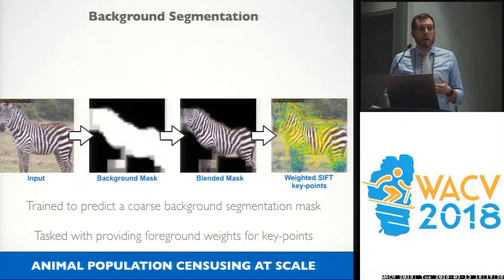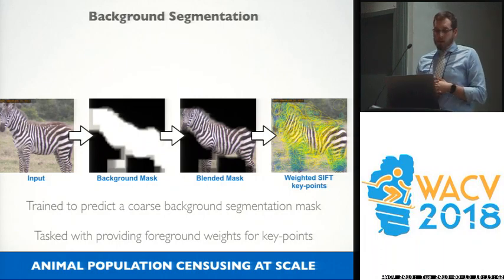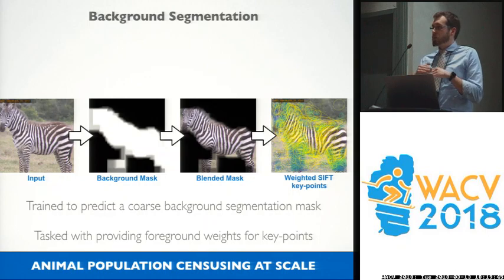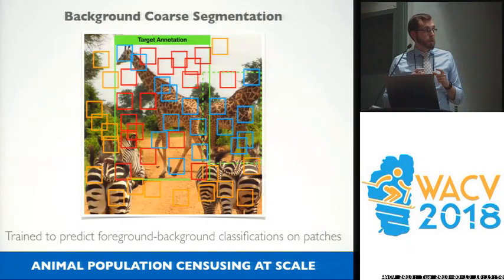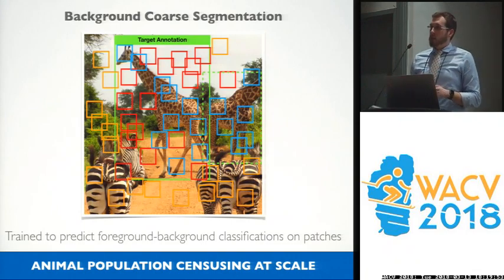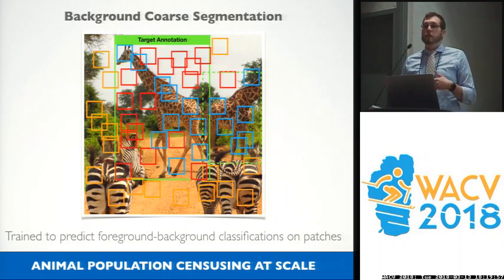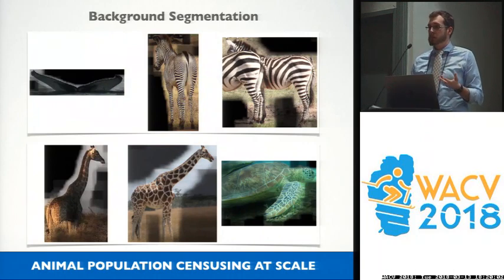We then perform background segmentation, trained to predict a coarse background segmentation mask. It is tasked with providing a foreground weight for all the keypoints used by the SIFT matching algorithm. This is trained with patches, so we have no segmentation data at all — which is both a benefit and a curse. We can train this patch-wise and get fairly decent and even compelling results on a species-by-species specific basis.